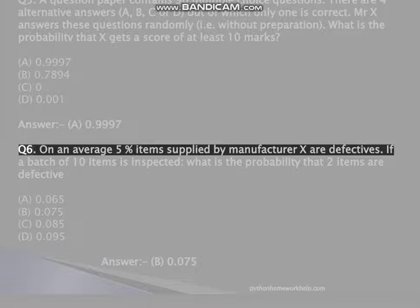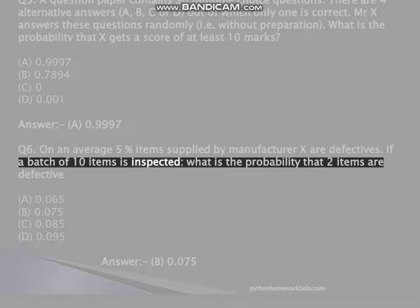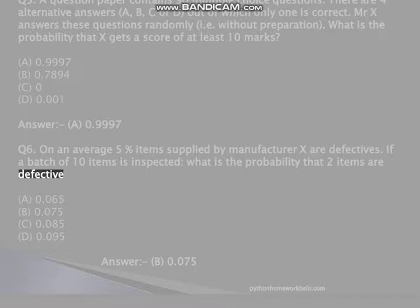Q6. On an average, 5% items supplied by manufacturer X are defectives. If a batch of 10 items is inspected, what is the probability that two items are defective? A, 0.065, B, 0.075, C, 0.085, D, 0.095. Answer: B, 0.075.